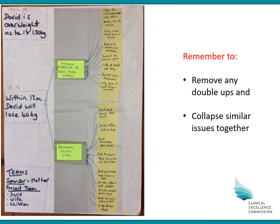This is what your driver diagram will look like on the butcher's paper. In the first column you have the problem, the aim, and the team. In the second column you have your primary drivers, and in the third column your secondary drivers. Remember, the relationship arrows go from right to left — from secondary drivers to the relevant primary drivers, then from primary drivers to the aim statement. Also remember to remove any duplicates and collapse similar issues together, ensuring the team agrees on anything removed or collapsed.